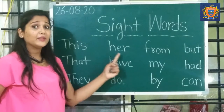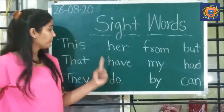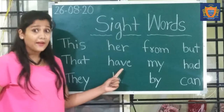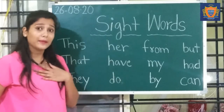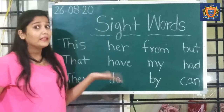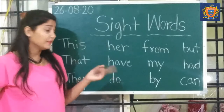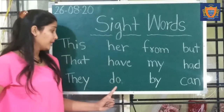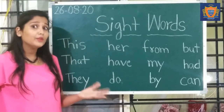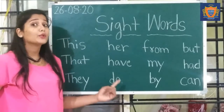Her. H-E-R. Her. 'Her' is used for girls, for females. Have. 'Have' means something we possess — I have a blue shirt, I have a black pen, I have a chair. Do. D-O. 'Do' means to perform, to do something. Do your homework and activity on time.